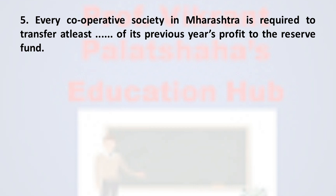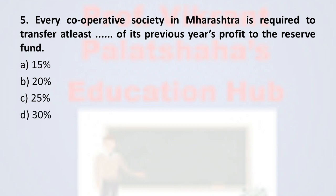Question number 5: Every cooperative society in Maharashtra is required to transfer at least ___ of its previous year's profit to the reserve fund. Option A: 15%. Option B: 20%. Option C: 25%. Option D: 30%. The correct option is option C, 25%. According to the Cooperative Societies Act, it is mandatory for cooperative societies to transfer 25% of the previous year's profit to the reserve fund. Therefore, the correct option is option C.